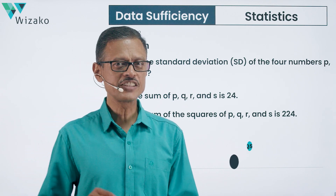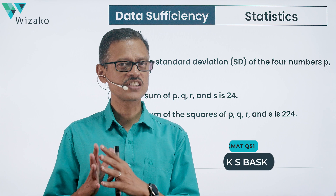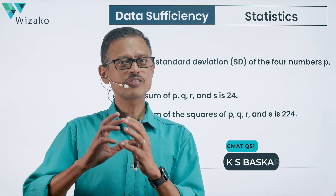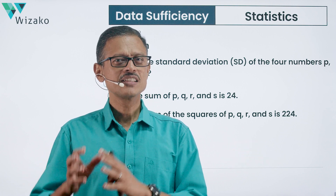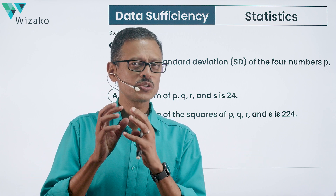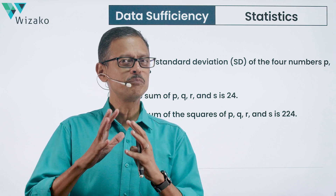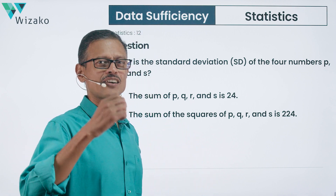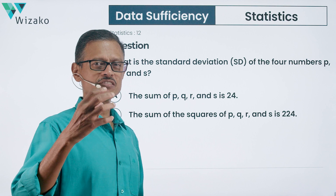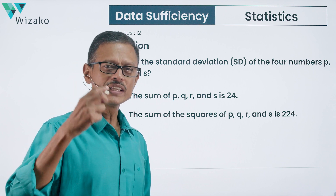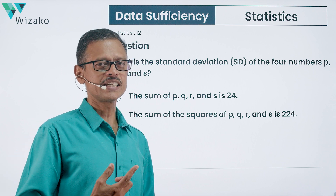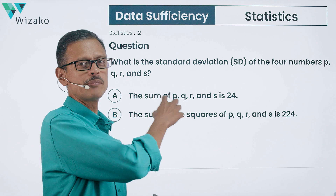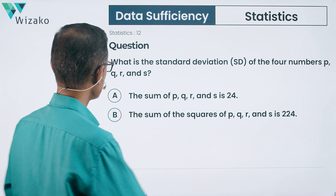Hi, all. This is a medium difficulty GMAT data sufficiency question. This DS question is primarily from statistics. It expects you to know how to compute the standard deviation of a set of numbers. It's a slightly concept-intensive question — knowing the method to compute standard deviation is necessary to solve this question. Let's get started.